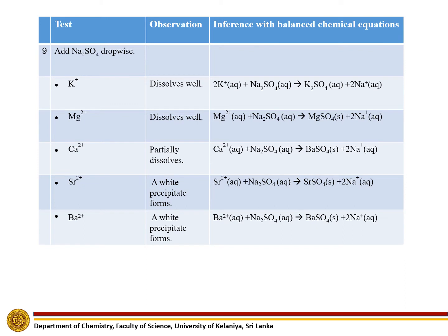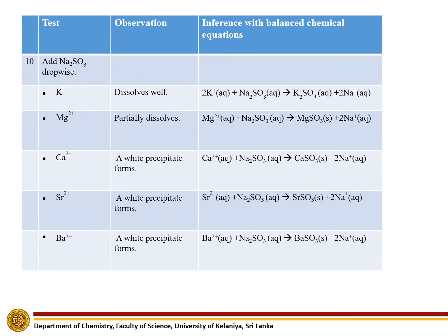When we add sodium sulphate dropwise, potassium and magnesium ion solutions will give soluble salts. Calcium partially dissolves in sodium sulphate, but strontium and barium will give white color precipitates. With further addition, only potassium will give a soluble salt; magnesium partially dissolves, while calcium, strontium, and barium give white precipitates with sodium sulphate.